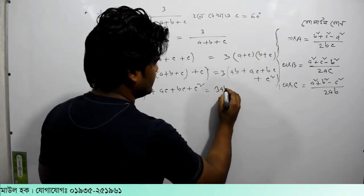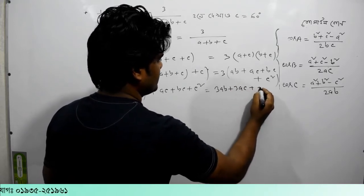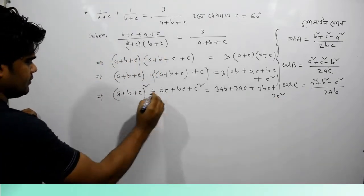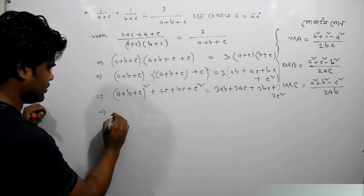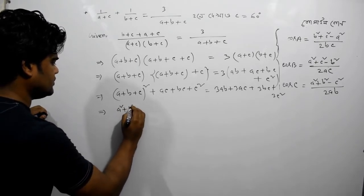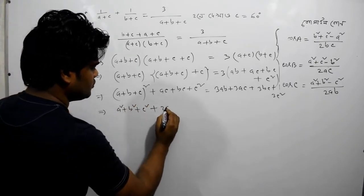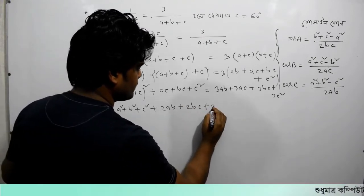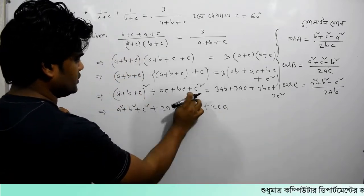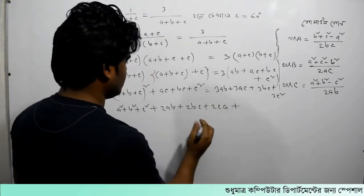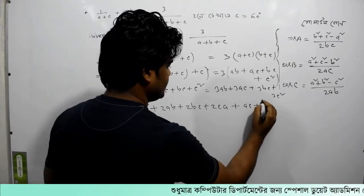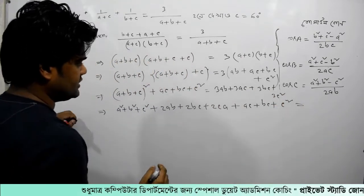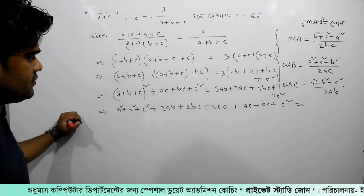The other one is A plus B plus C square. 2ab plus 2bc plus 2ca. Now I will save them 3ABCC2. Then I will save them 3ABAC3BC.